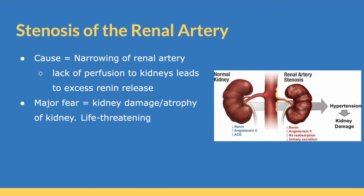Moving on to stenosis of the renal artery, this is where we get narrowing of the renal artery. Because of this, we get a lack of perfusion to the kidneys, and as a result, we get excess renin release. Eventually, this release of renin will cause hypertension, potentially putting a patient at risk for kidney damage or atrophy. It is a life-threatening condition that needs to be addressed immediately.